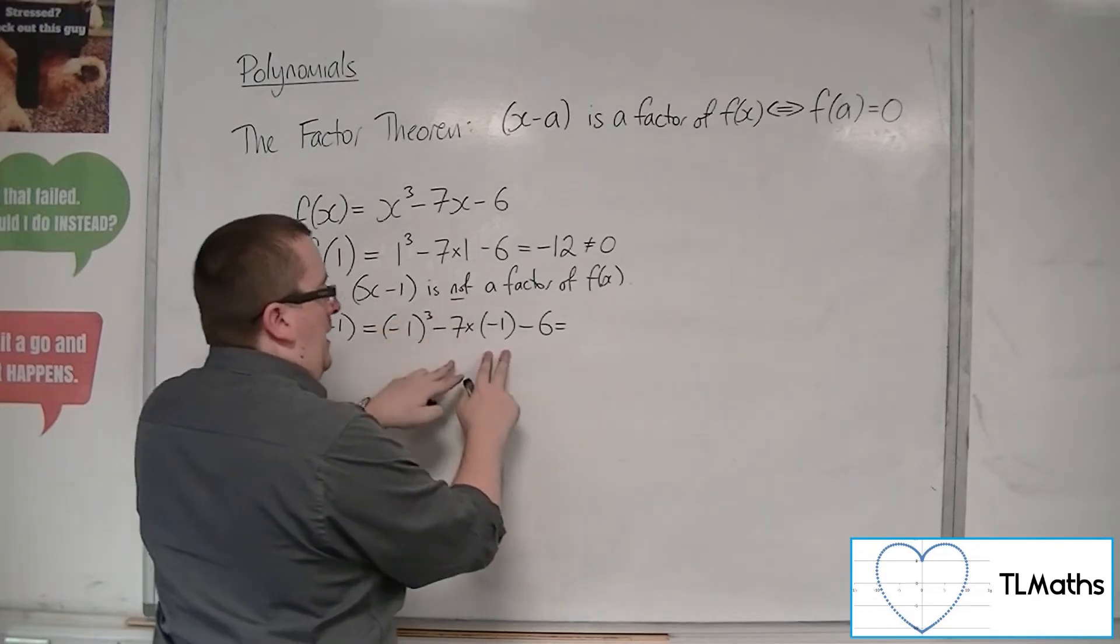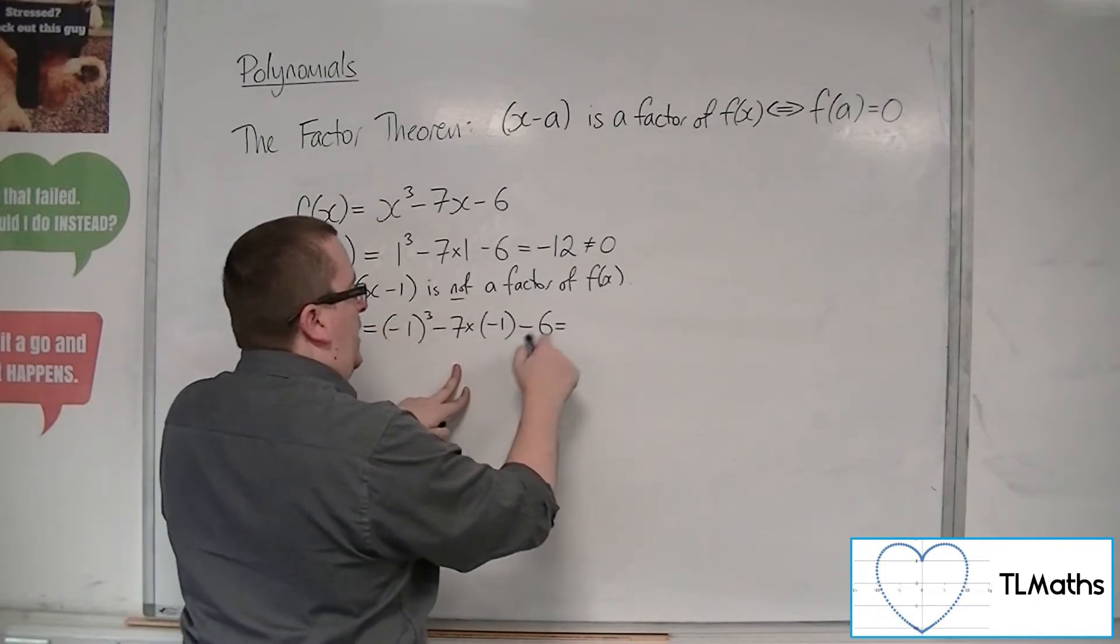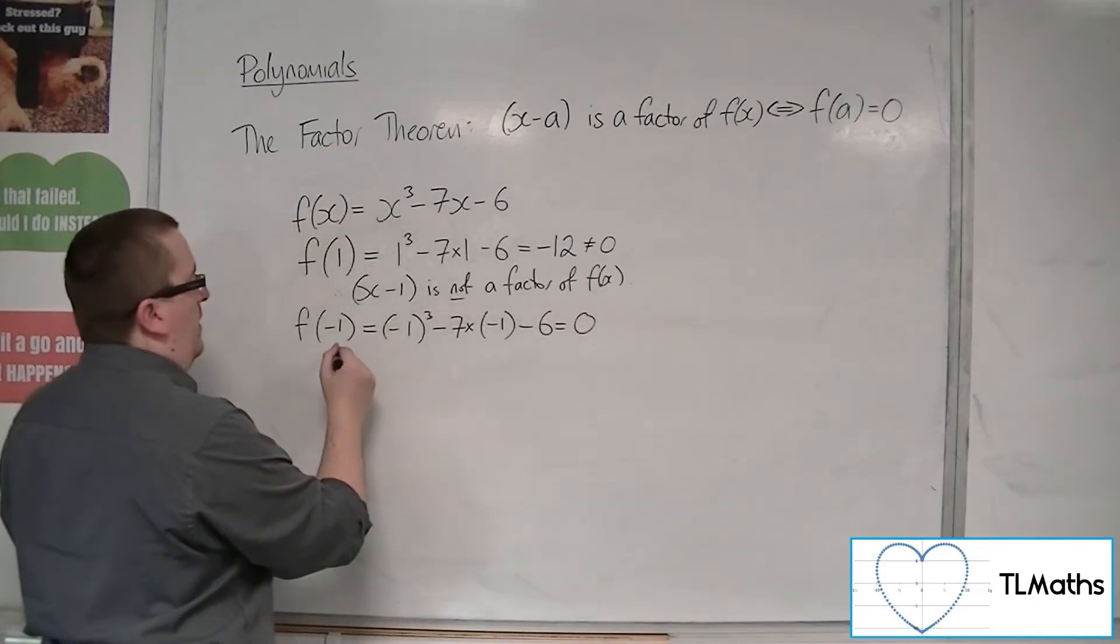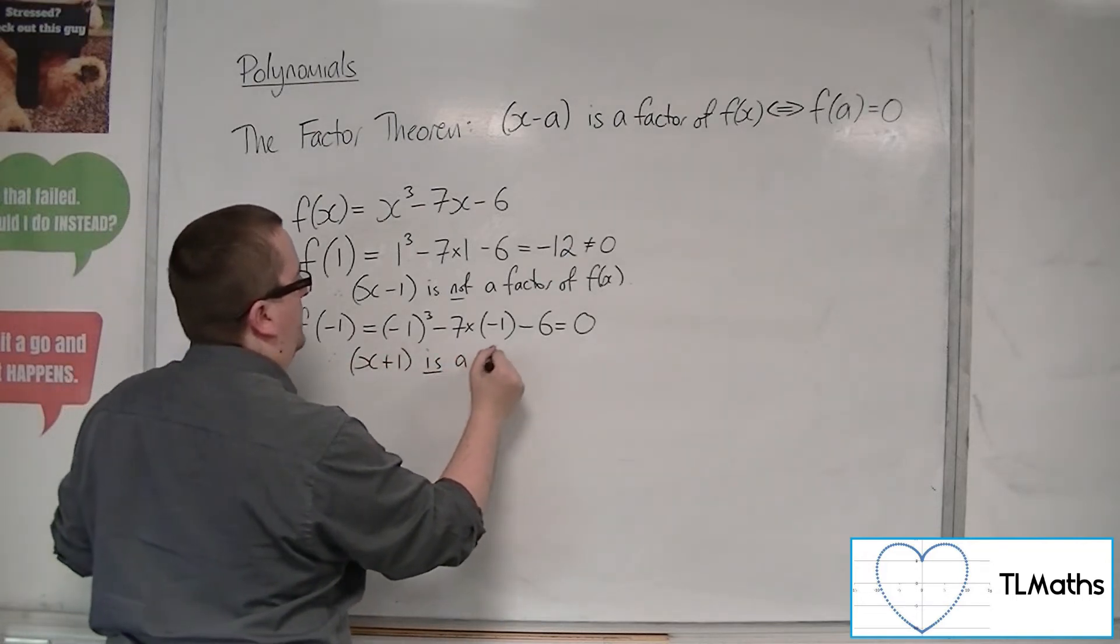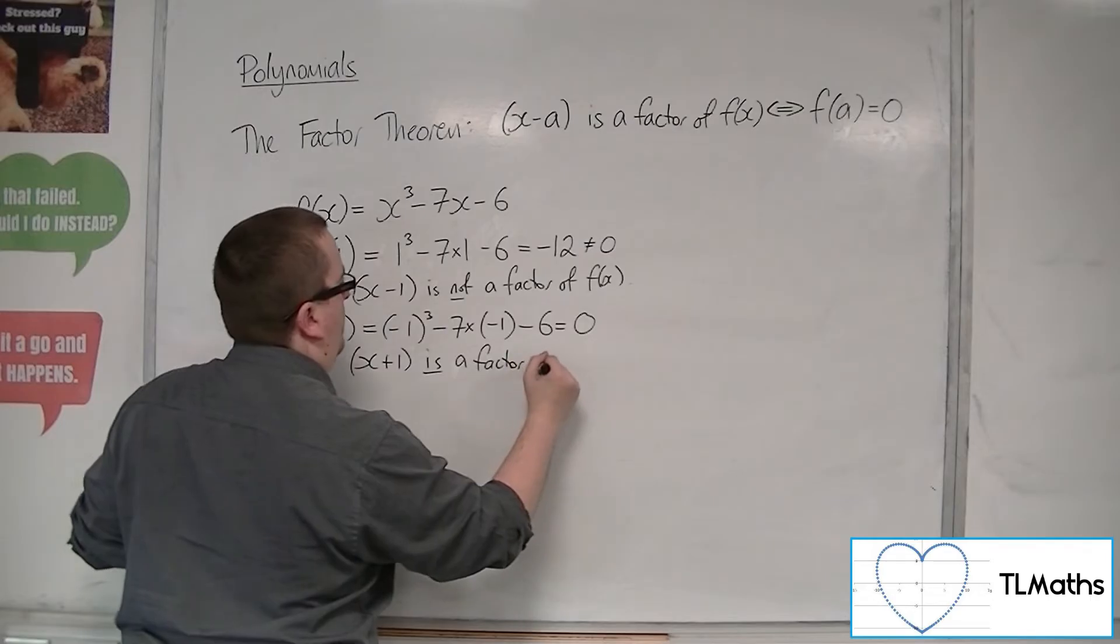So that's minus 1 plus 7, so that gets to be 6, take away 6 is 0. So therefore, x plus 1 is a factor of f of x.